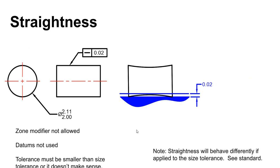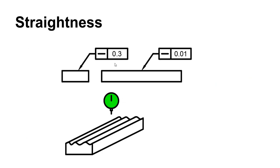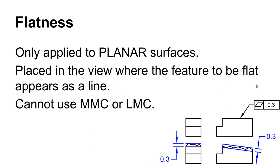Straightness has direction to it. Looking at this image, both parts — looking at the 0.3 straightness in this direction along one axis and the 0.01 along the long axis — this part is very straight in the 0.01 direction but starting to push the bounds of the 0.3 dimension. So this part could be fine. If the corrugations were rotated 90 degrees it would fail outright. There is always a direction to the symbols.